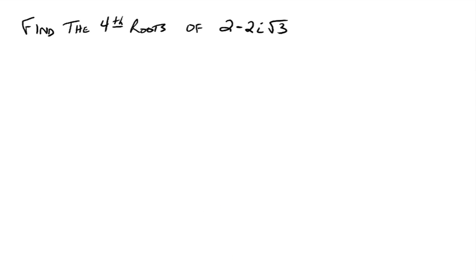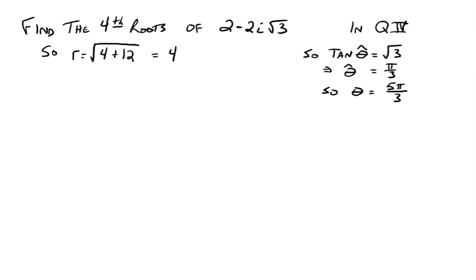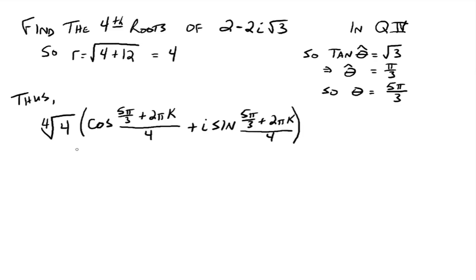Let's find the fourth roots of 2 minus 2i radical 3. First, R equals the square root of 2 squared plus negative 2 radical 3 squared, which gives 4 plus 12 equals 16, so R equals 4. This complex number is in quadrant 4. Using the reference angle idea, tangent theta-hat equals 2 root 3 over 2, simplifying to root 3, giving a reference angle of pi over 3. So theta equals 5 pi over 3. The form for our roots uses the fourth root of 4 times cosine of (5 pi over 3 plus 2πk) all over 4 plus i sine of (5 pi over 3 plus 2πk) all over 4.